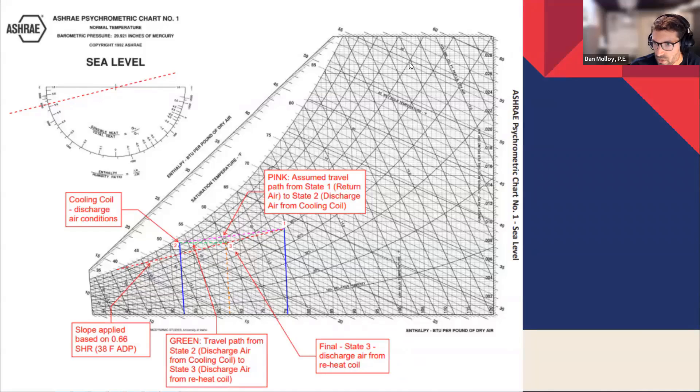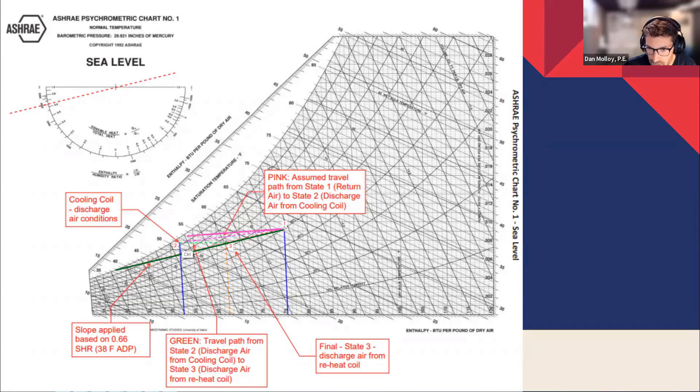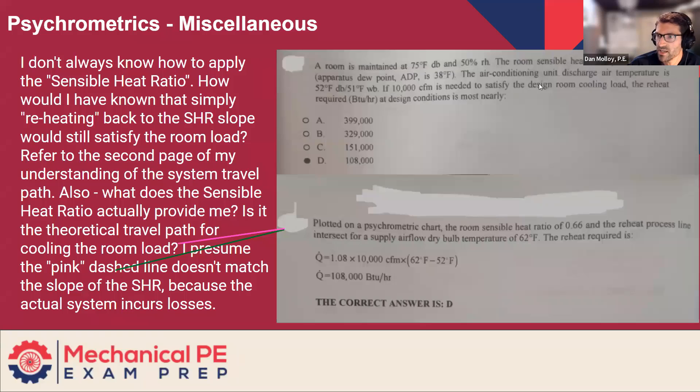But let's get some darker colors. I'll go with a dark green right over your green. So this line is the sensible heat ratio line. And then the pink, do we have pink? Look at that. Got to love zoom. Is the line connecting one to two, which is the room condition to the discharge condition? By the way, I think what's a little bit confusing about the way this question is worded is the fact that they said the air conditioning unit discharge air temperature is 52, 51. And then there's reheat.